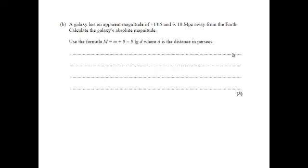Let's have a look at this now. It's a little bit trickier. A galaxy has an apparent magnitude of 14.5 and is 10 megaparsecs away from the Earth. Calculate its absolute magnitude. Now, 10 megaparsecs, what's a megaparsec?